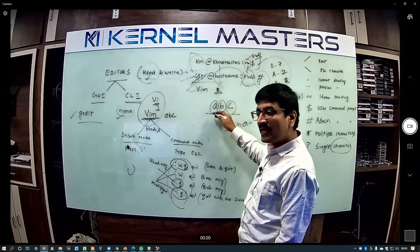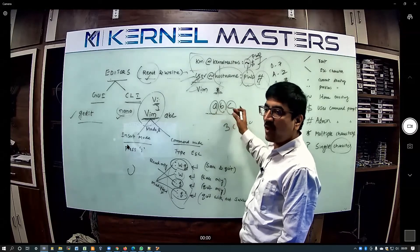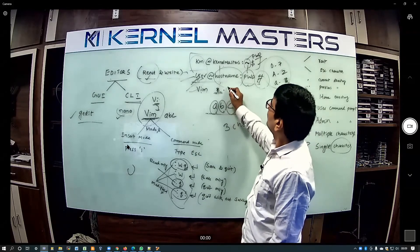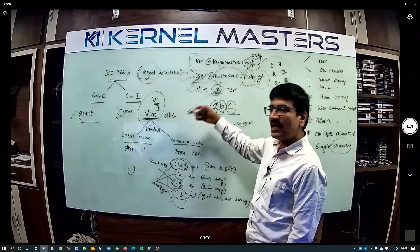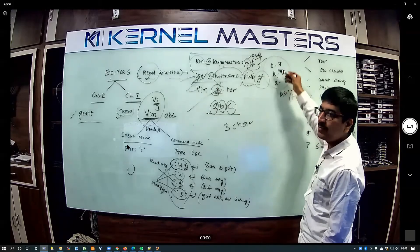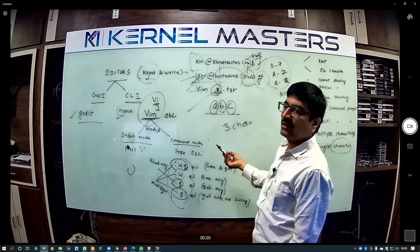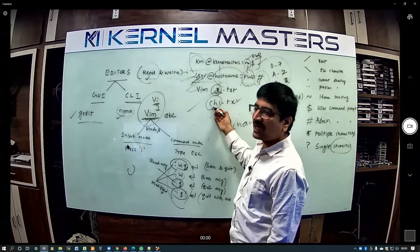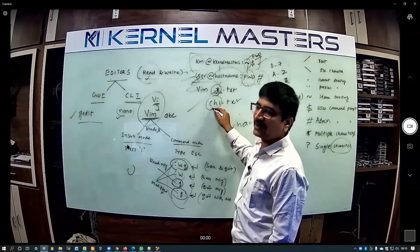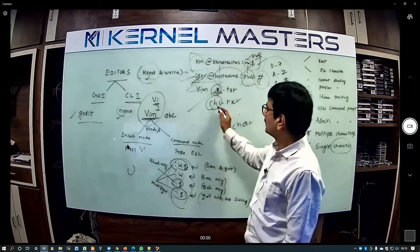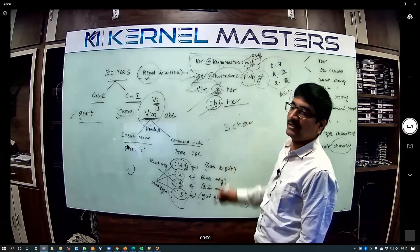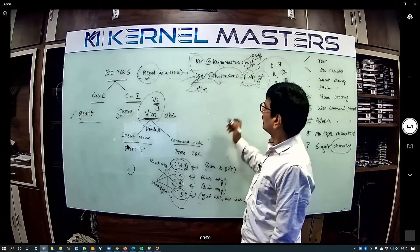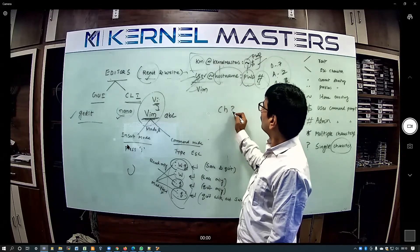Star indicates any number of characters — uppercase, lowercase, numerical, symbol, whatever. For example, star.txt means the file begins with any number of characters and the extension should be .txt. But if I mention ch?.txt, the question mark indicates how many characters? Tell me.